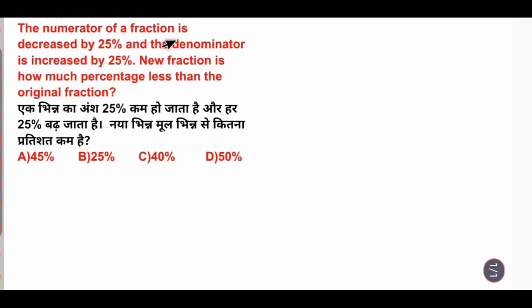The numerator of a fraction is decreased by 25% and the denominator is increased by 25%. New fraction is how much percent less than the original fraction? The numerator decreases by 25%, so 100% minus 25% equals 75%.